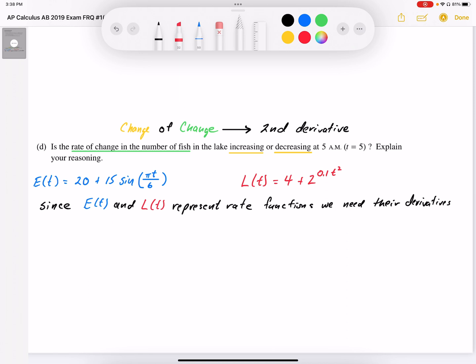But in this case, since E(t) and L(t) are already rate functions, we just want the derivatives of the rate functions.